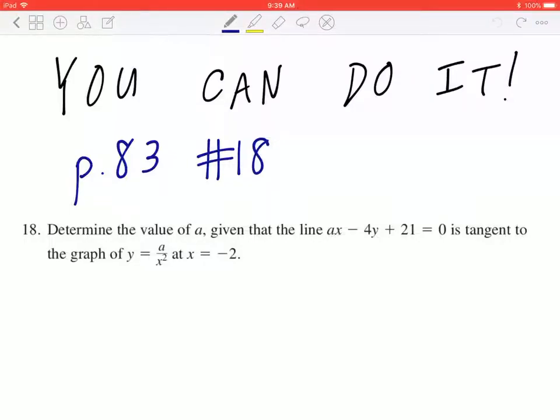Hi, everyone. Let's take a look at number 18 on page 83. Determine the value of a, given that the line ax minus 4y plus 21 equals 0 is tangent to the graph of y equal to a divided by x squared at x equal to negative 2.